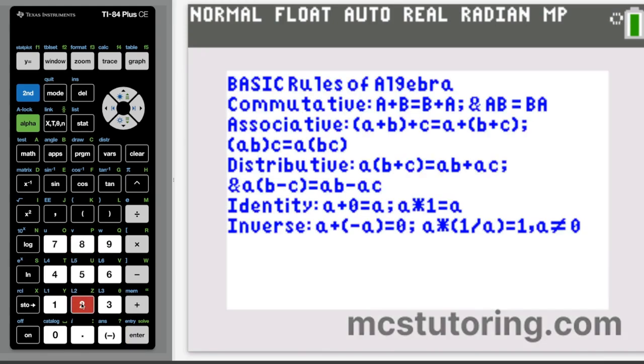Next thing, we have basic rules of algebra. So if a teacher said, what rule am I using here? Commutative. We're just changing the order of things, both for addition and multiplication. And then associative, we're changing where the parentheses are in an addition or multiplication.